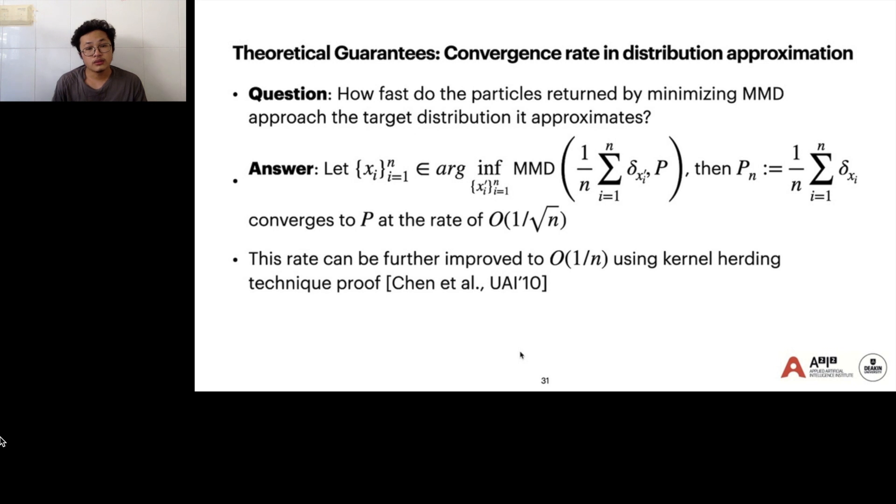Then there's a guarantee in the convergence rate in distributional approximation. The particles, the pseudo-particles, can reconstruct the empirical distribution, which approaches the true distribution P at the rate of 1 over square root of N. This rate can be further improved to 1 over N using kernel Stein discrepancy.